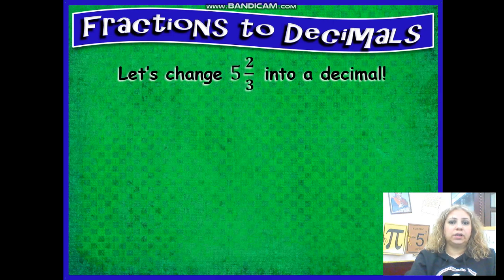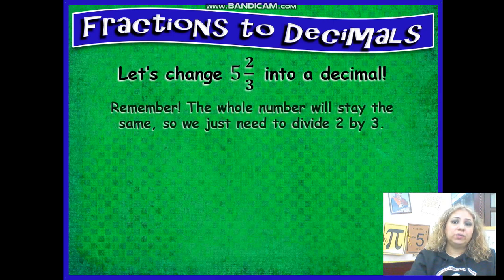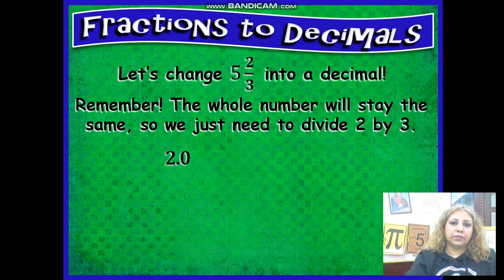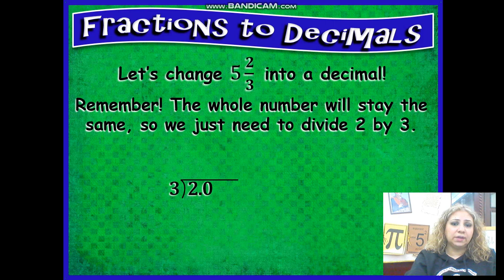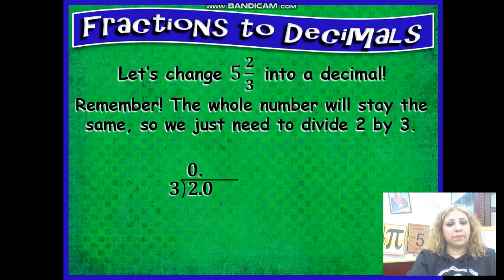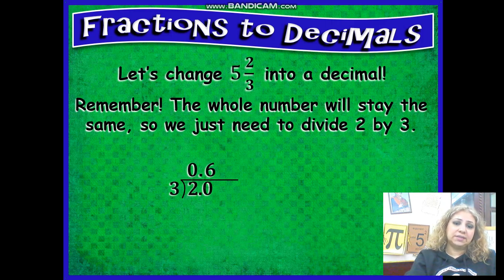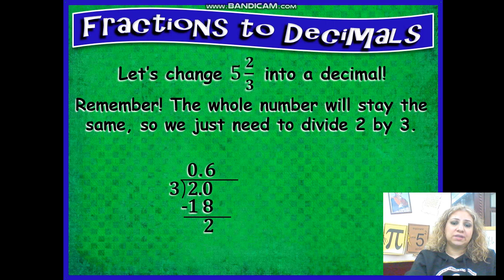Let's change five and two thirds into a decimal. Divide the numerator by the denominator. Two is less than three. So I'm going to attach a zero and a decimal point. Start with zero decimal point. Make sure that you put the decimal point directly on the top in the quotient above the dividend. Twenty divided by three is six. Multiply. You get 18. Subtract two. Attach a zero.